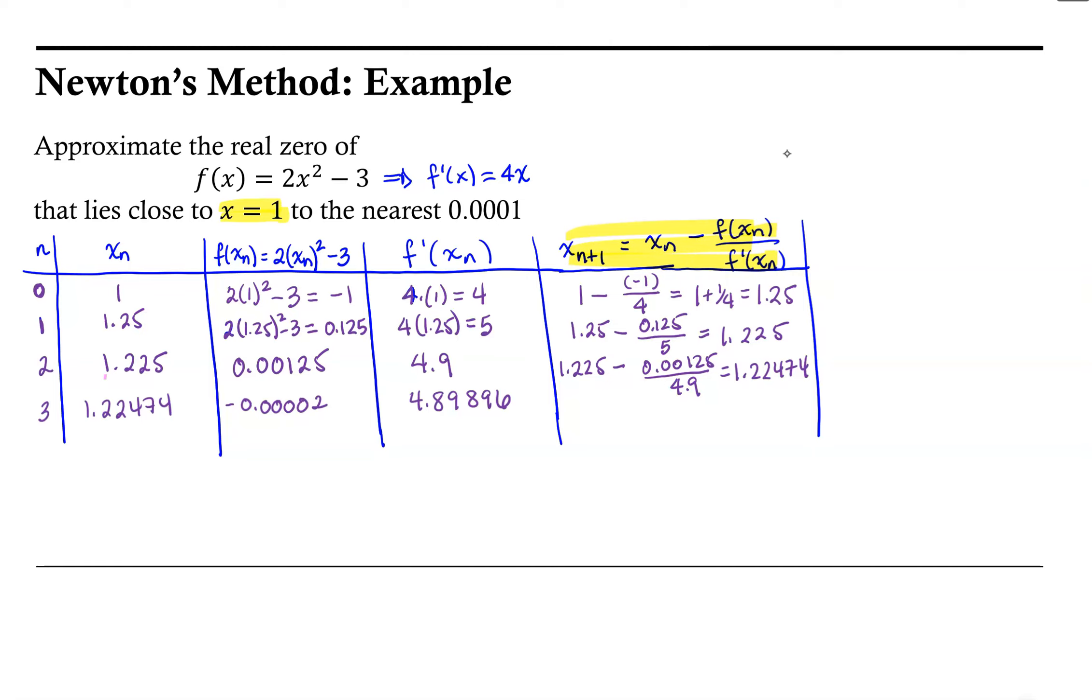f prime at 1.22474 is 4.89896. And then if we combine those using the iterative formula we had determined based on intercepts of the tangent line, we find that for x3 we can produce a next intercept that is 1.22474.